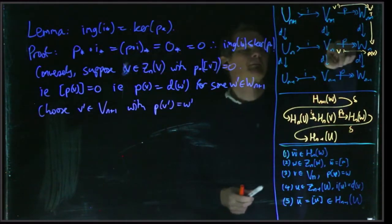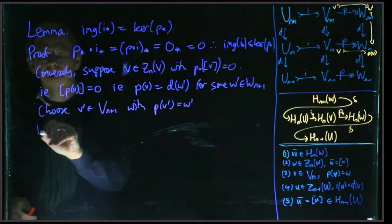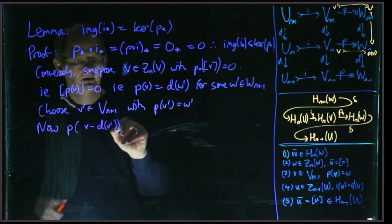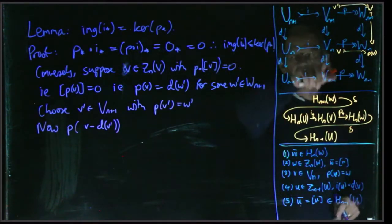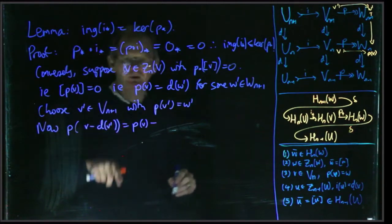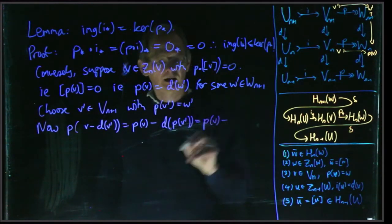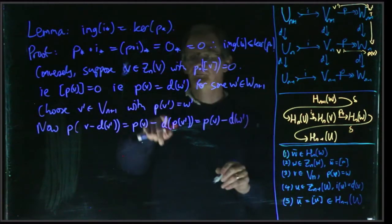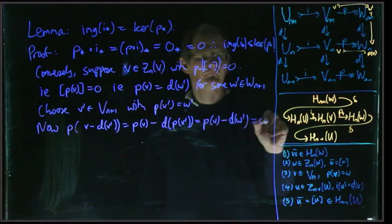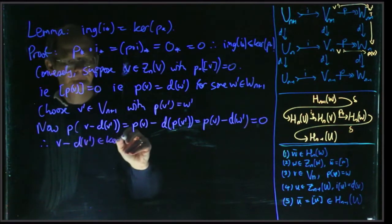You might think that d(v') is the same as v, but it's not necessarily. So let's subtract them and look at v minus d(v'). It's not going to be zero in general, but p of it is going to be zero. So that's p(v) minus p(d(v')), but p and d commute since it's a chain map, so I can write that as p(v) minus d(p(v')). That's p(v) minus d(w'), but d(w') was p(v) as we wrote. So we see that v minus d(v') is in the kernel of p, because p of it is zero.